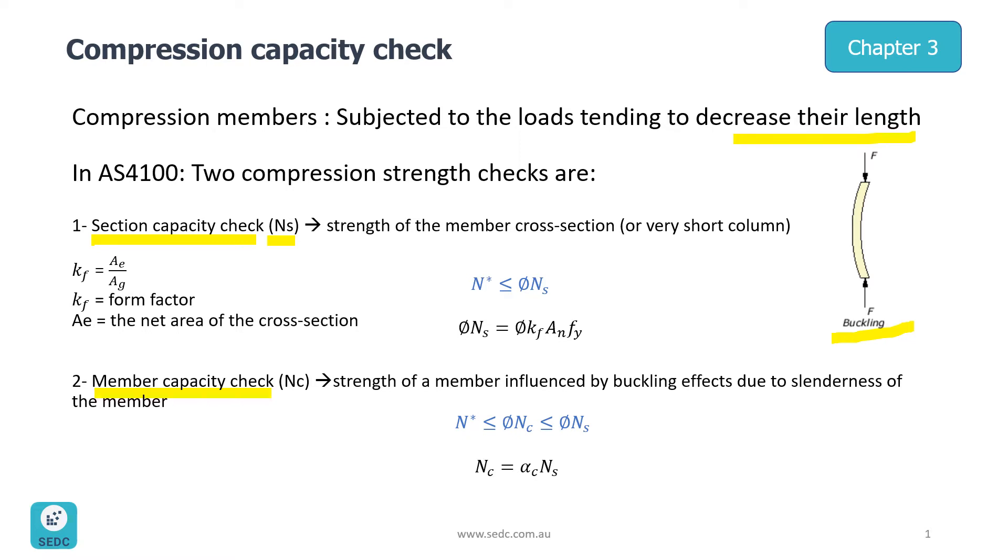The governing formula here is N* ≤ φNS. N* is our design action which is our axial load applied on the member from analysis, and φ is a reduction factor which we can get from a relevant table from AS4100.